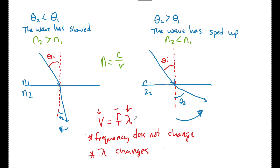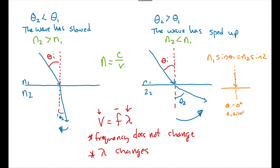It's also worth noting that the incident angle must be greater than zero for refraction to happen. Looking at Snell's law — n1 sine theta1 equals n2 sine theta2 — the sine of zero degrees is zero. If a wave were incident right on the normal, theta would equal zero degrees, giving n1 times sine of zero equals zero, meaning no refraction. So theta must be greater than zero for refraction to take place.